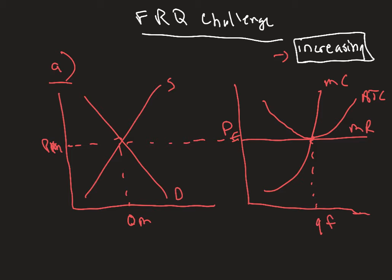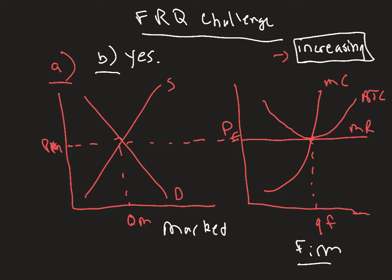Looking at Part B: is the firm allocatively efficient as I graphed it? This is asking about the firm specifically, not the market — they could ask about either. The answer is yes. The firm is allocatively efficient because price is equal to MC at the profit maximizing quantity.